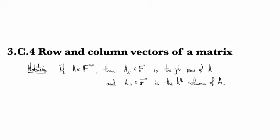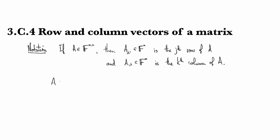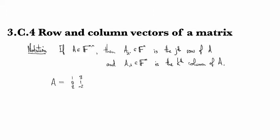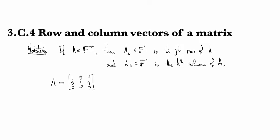Okay, so that's row and column notation. Just for example, if we took A to be something like [1, 0, 2; 3, 1, -2; 2, 4, 7], like this.